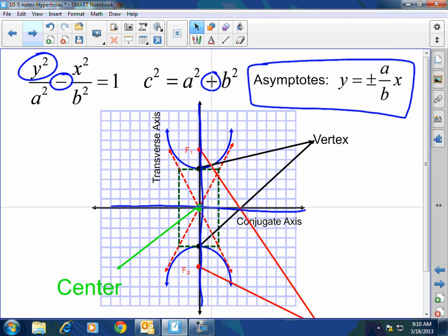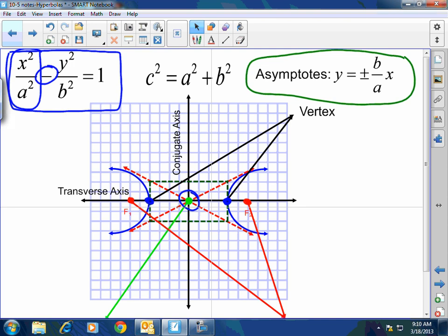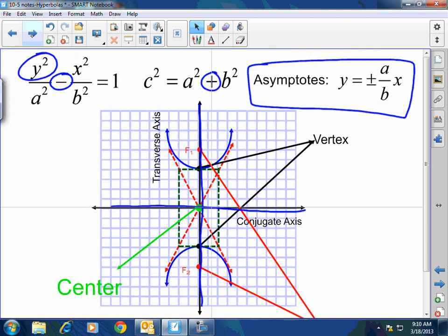So when y squared comes first, it is a vertical hyperbola. And the asymptote is a over b. Correct, and the asymptote is a over b. When the x squared comes first, it is a horizontal hyperbola, and the asymptotes are b over a. They do switch.